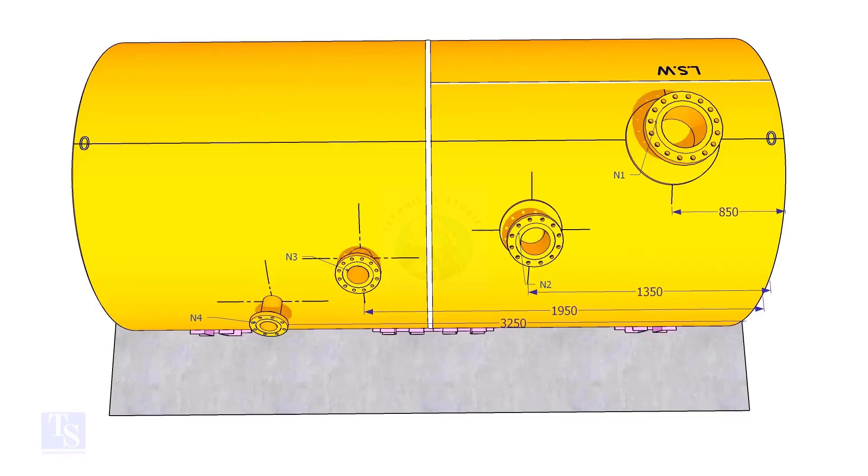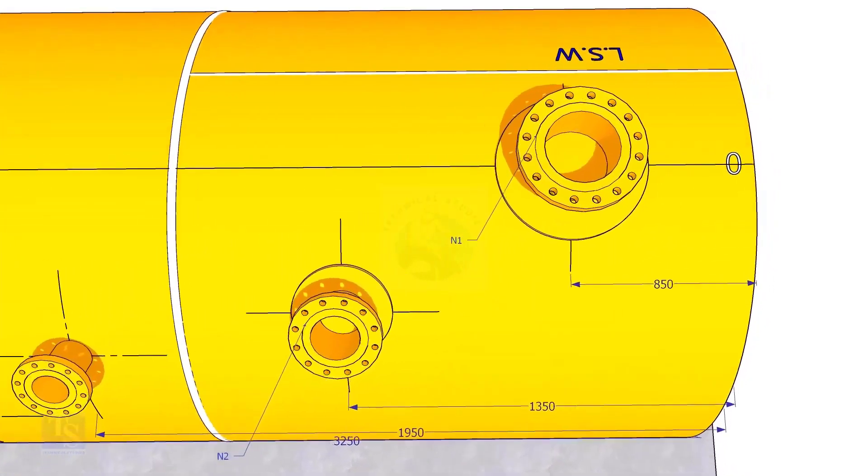Extend the nozzle N1 center line up to the other end of the shell and mark it as 0 degree.